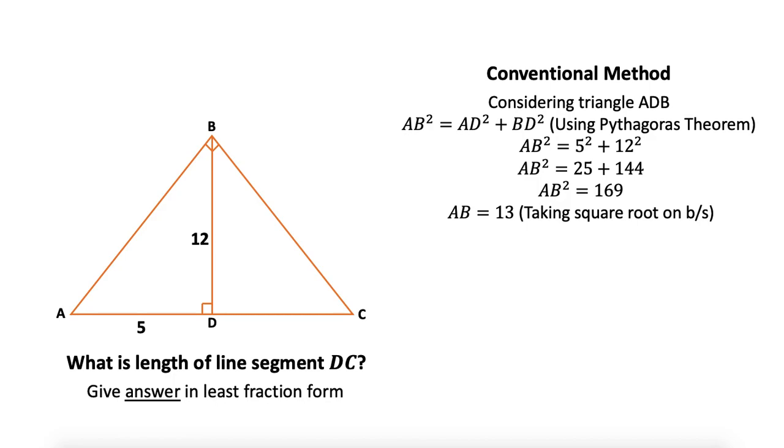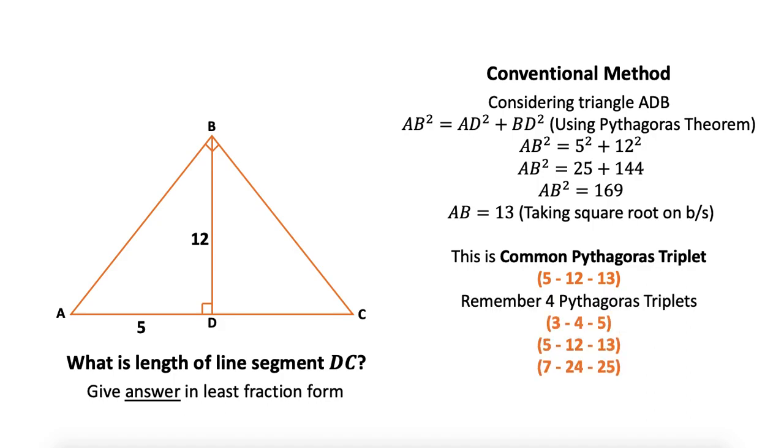If you see closely, this is a Pythagorean triplet 5-12-13. You should remember four common triplets: 3-4-5, 5-12-13, 7-24-25, and 8-15-17.